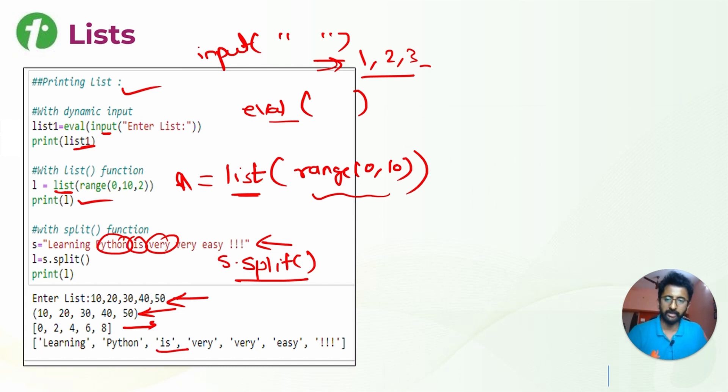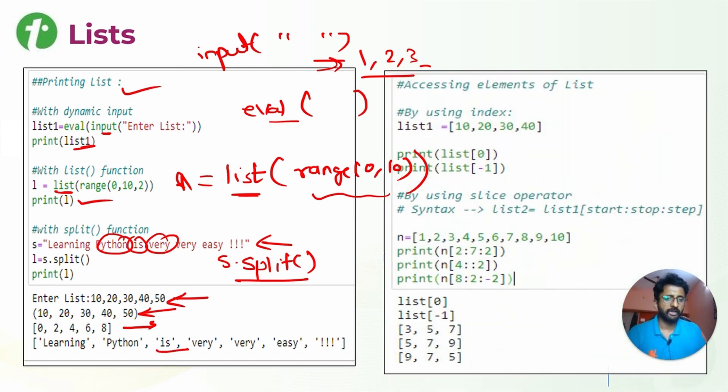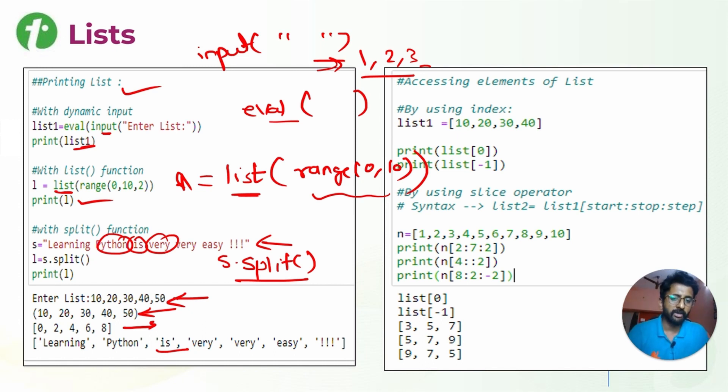After that, how to access those elements? Just similar to the way we have seen in strings, we can access them using index. List[0] is 10 and list[-1] is 40.